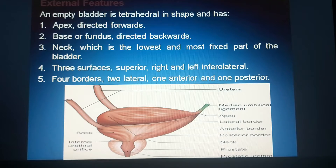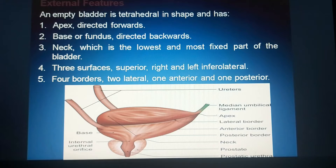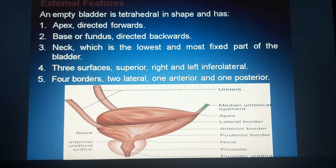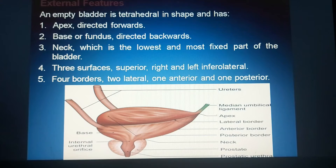Coming to the external features of the urinary bladder when the bladder is empty, the urinary bladder is tetrahedral in shape and it has an apex, base, neck, three surfaces, and four borders. The apex is directed forwards, the base or fundus is directed backwards, and the neck is the lowest and most fixed part of the bladder.